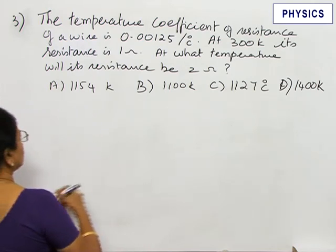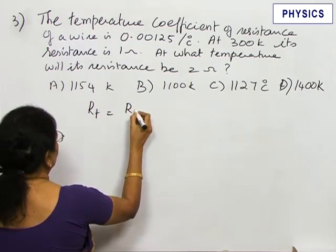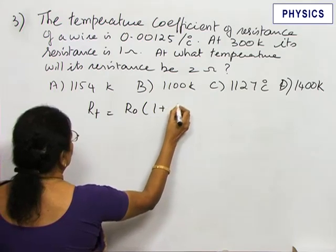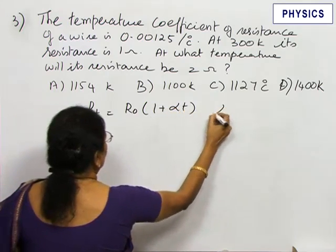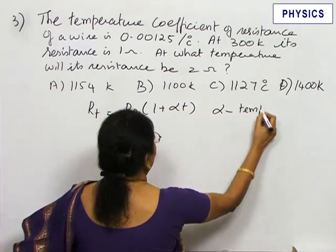This is based on temperature coefficient of resistance. The resistance of metallic wires increases with temperature. Alpha is called the temperature coefficient of resistance.